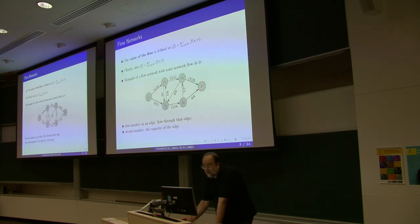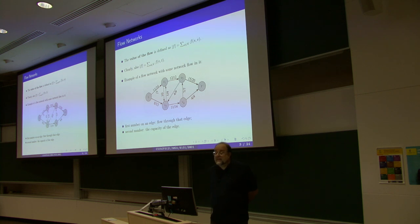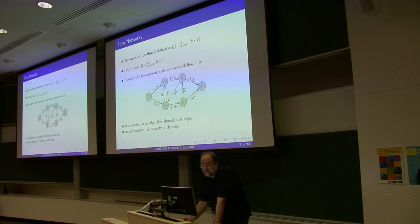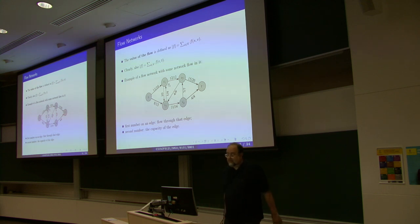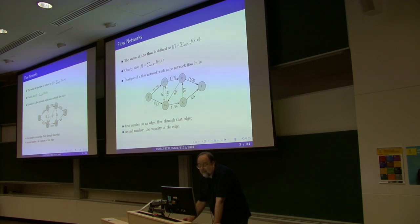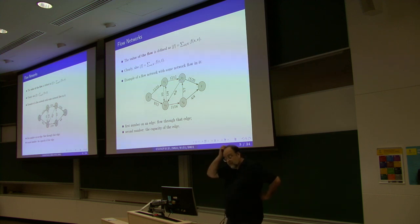Here is an example of a network with some flow in it. The convention is that the first number indicates the amount of flow going through the edge and the second number indicates the total capacity. For example, from S to V1, we have 11 units going in this direction out of a total capacity of 16 units, which means you have spare capacity of 5 units.